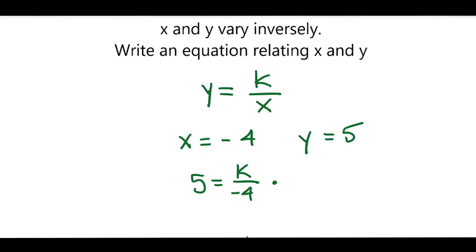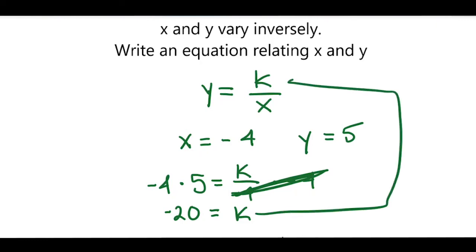Now we will solve for k. I will multiply both sides by negative 4. These negative 4's cancel. I'll bring down the k, and negative 4 times 5 is negative 20. So k equals negative 20. I'll take the value of k and plug that into our inverse variation model. So y equals negative 20 divided by x. That's how you write an equation relating x and y.